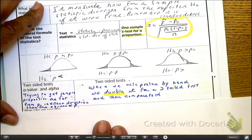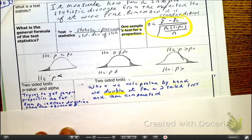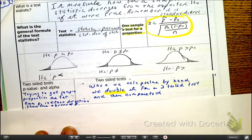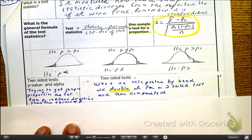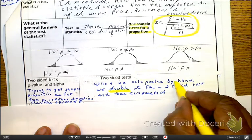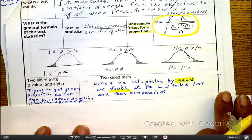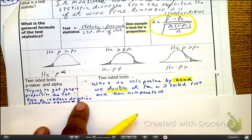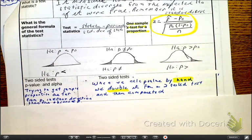A two-tail test basically means we're trying to see how far the sample mean is from that of the population in either direction. Let me slide that over so you can get a better picture. So that means when we have to calculate this by hand, we have to double the p-value that we found, because we're talking about in either direction — how far it is from the mean in either direction. So when we get the p-value, we take it and we double it.